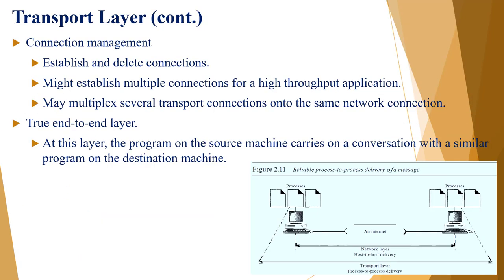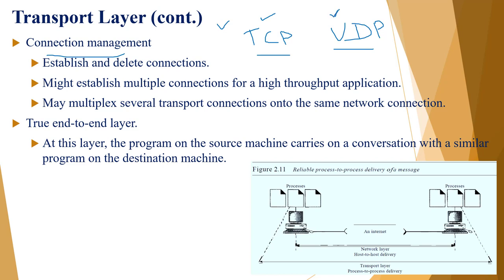The transport layer handles connection management and supports the two most important transport protocols: TCP (Transmission Control Protocol), which is connection-oriented, and UDP (User Datagram Protocol), which is connectionless. The transport layer can establish and delete connections, and supports multiple simultaneous connections from one source to many destinations.